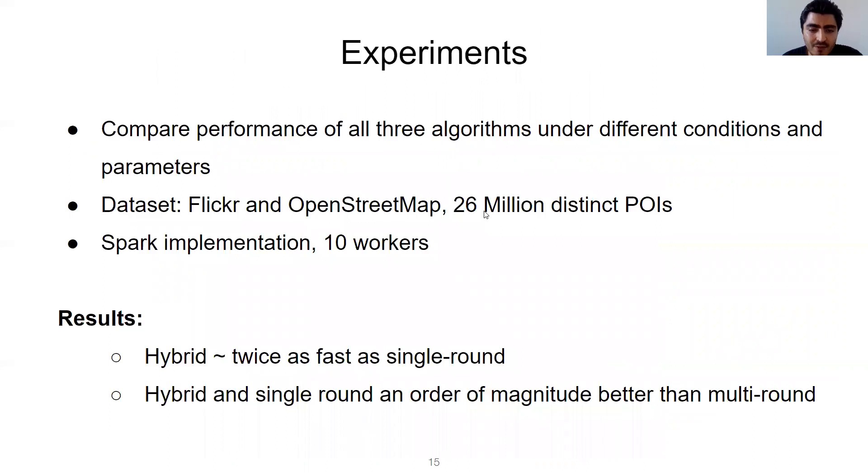Through our experiments, we have evaluated all three algorithms while asking different queries on varying datasets. Our dataset was a combination of the OpenStreetMap and the Flickr dataset that contains 64 million points, and 26 million of these points are distinct. Our experimental setup was a cluster with one coordinator and 10 executor nodes having 30 gigabytes of RAM.